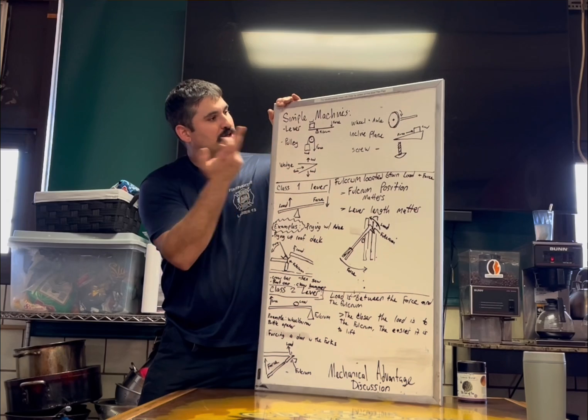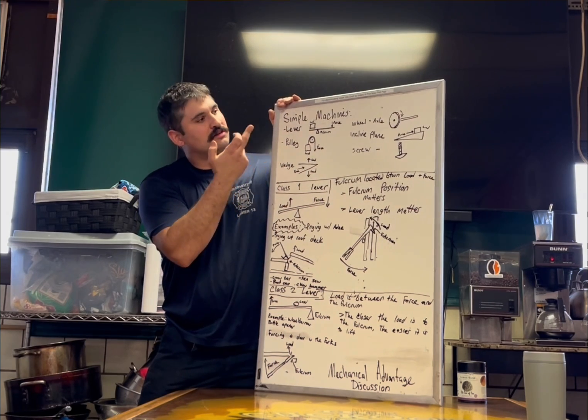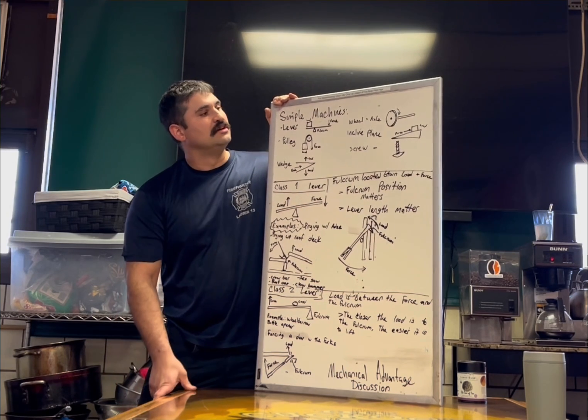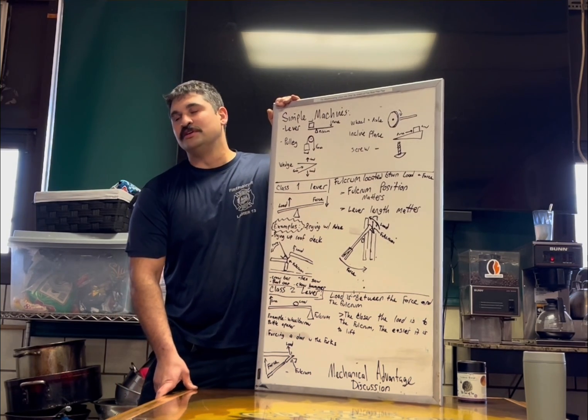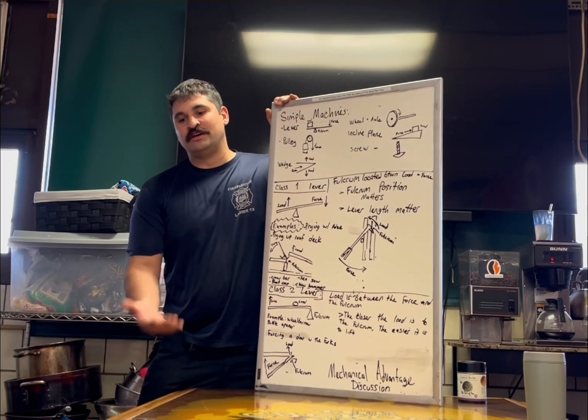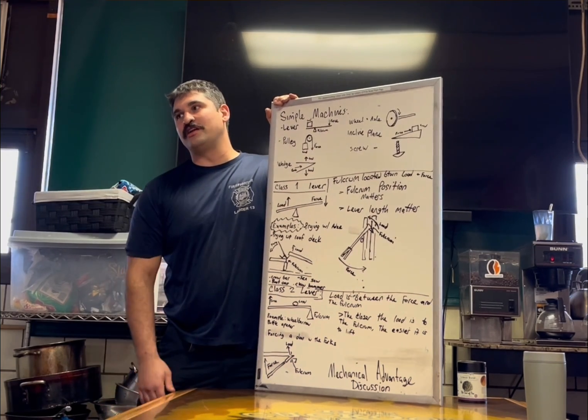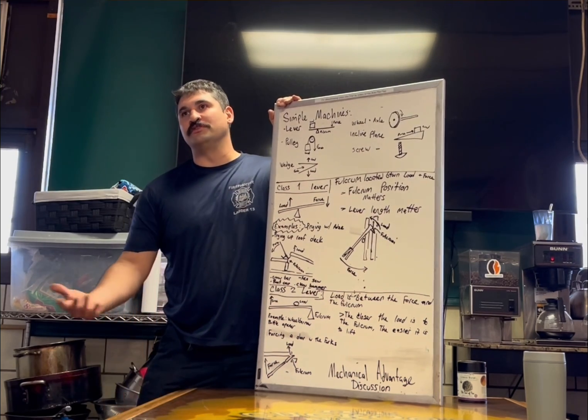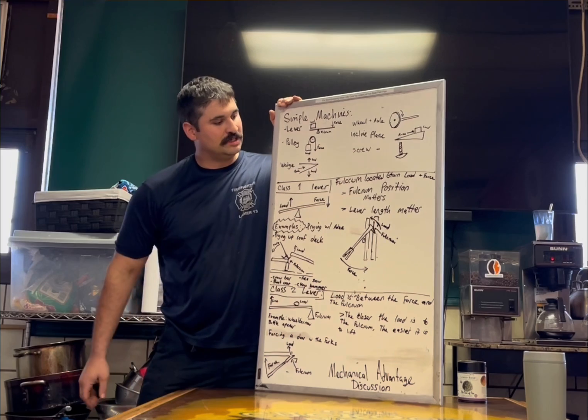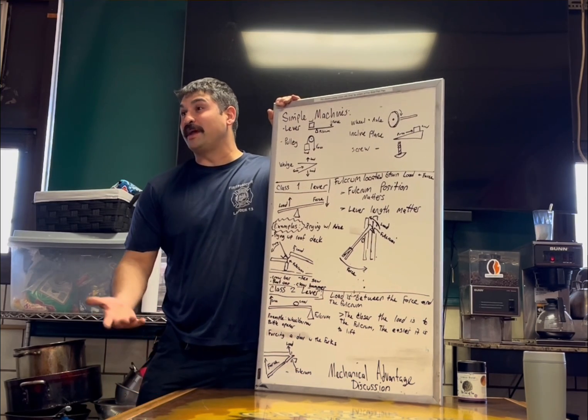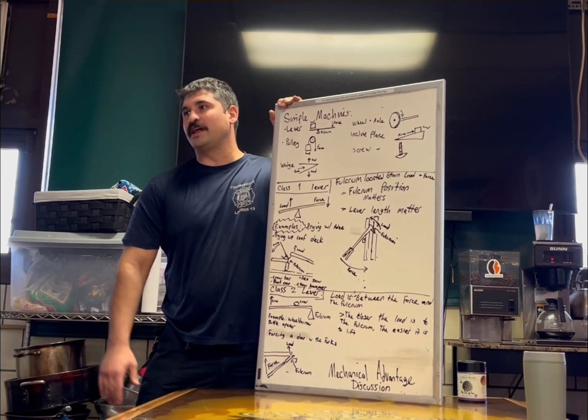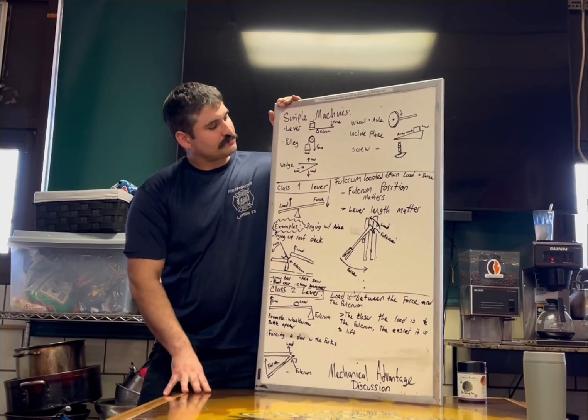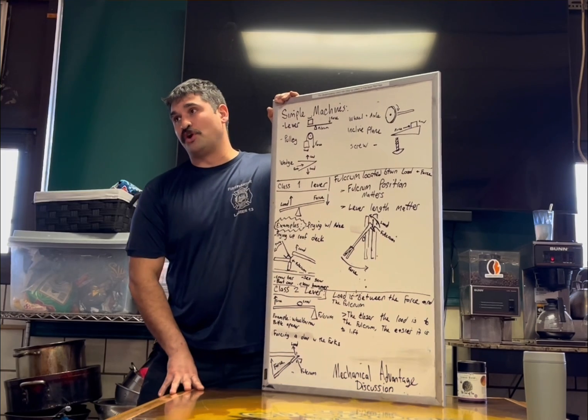We've got levers, which we know about. Pulleys, we use a little bit here and there. Wheels and axles - obviously the truck gets to a fire, so we have wheels and axles. Incline planes, imagine like a ramp. How do you get something from the ground up to somewhere higher without exerting a lot of energy? Use a ramp. And screws, Archimedes screw for lifting water, screws for actually gripping into wood. And the wedge. We use wedges. A lot of our tools are wedges. An ax is a wedge.